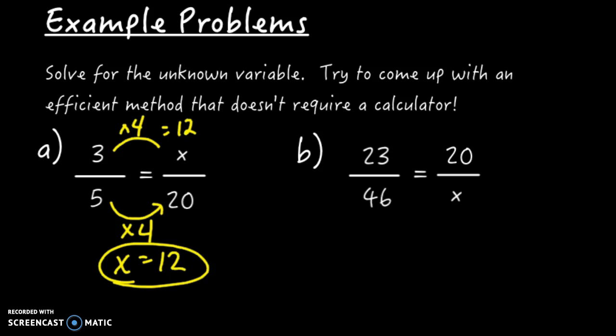The second problem B says 23 over 46 equals 20 over x. Well, if you try to go left to right here, 23 to 20, that scaling factor is not very pretty. 20 over 23 is kind of eh.